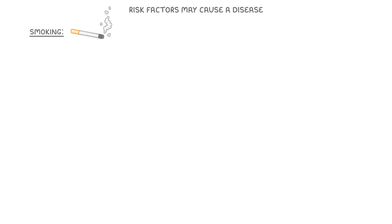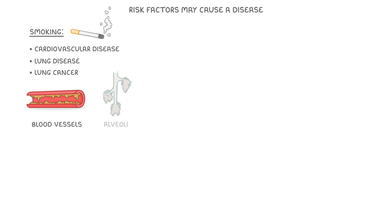In other cases, certain risk factors might directly cause a disease. For example, smoking has been proven to directly cause cardiovascular disease, lung disease and lung cancer. And we know this because the toxins in smoke can directly damage the walls of our blood vessels and the cells that line our lungs.